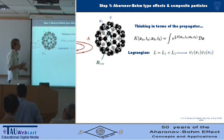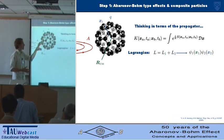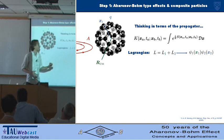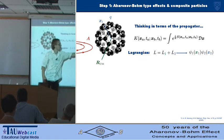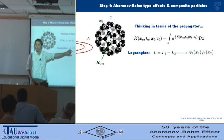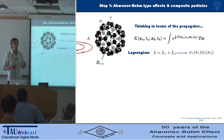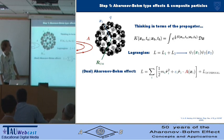And if we find that the Lagrangian for this system in the Aharonov-Bohm effect breaks into the sum of two pieces, then we know that it will evolve from product state to product state, so we'll keep coherence. So the centre of mass will remain coherent, as long as it isn't coupled to the internal degrees of freedom.